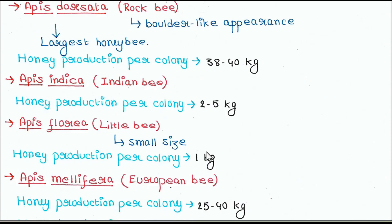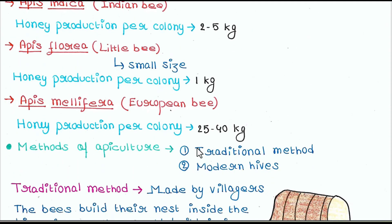Next is Apis mellifera. They are also known as European bee. Honey production per colony is 25 to 40 kg.